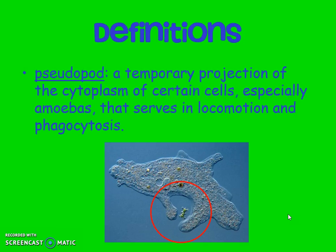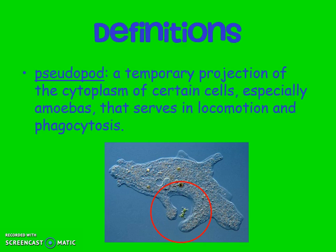Another term is pseudopod, which actually means false feet. This is a temporary projection of the cytoplasm — it's this right here. This is an amoeba, and this is what amoebas use to move as well as to eat. In this picture you can actually see that it is forming the pseudopod to gather its food. What you need to know about pseudopods is they're not always there — they kind of form temporarily. They open up, make the little pseudopod, eat, and then there's kind of a big blob after that.